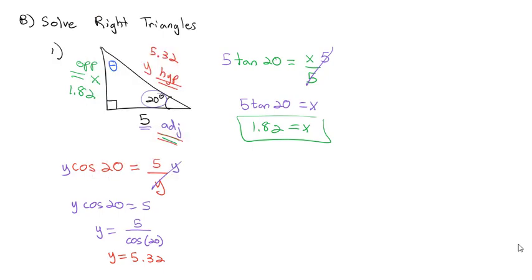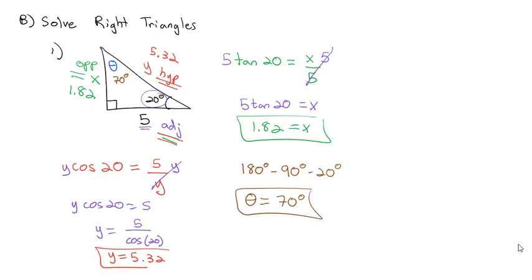The only piece left is the missing angle. We know all angles of a triangle add up to 180 degrees, and we have a 90-degree angle and a 20-degree angle. So the missing angle theta equals 180 minus 90 minus 20, which is 70 degrees. We've now solved the triangle: the missing angle is 70 degrees, the hypotenuse is 5.32, and the opposite side is 1.82.